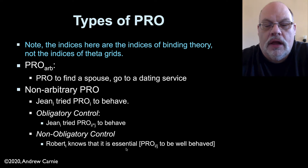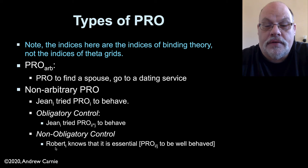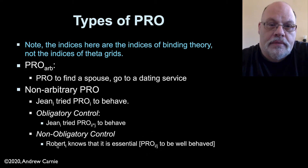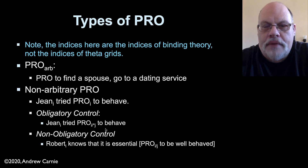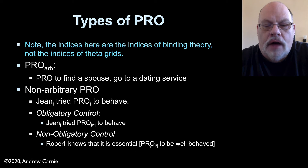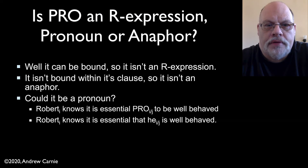Non-obligatory control does not have that requirement. It can refer back to another noun phrase in the sentence, but it doesn't have to — so in this way, it's behaving like a pronoun. In 'Robert knows that it is essential to be well-behaved,' the subject of 'to be well-behaved' can either refer back to Robert or to somebody else. This is a confusing set of patterns because obligatory control makes it look a little bit like an anaphor, and non-obligatory control makes it look a little bit like a pronoun.